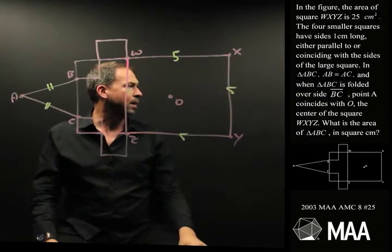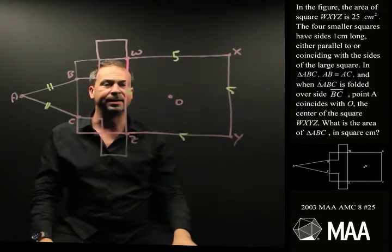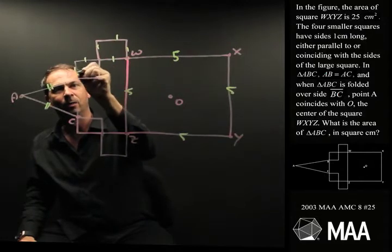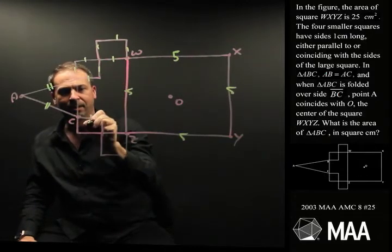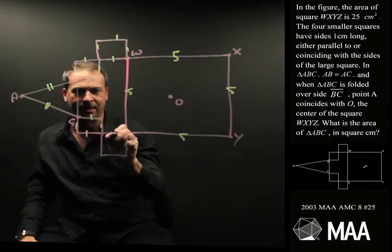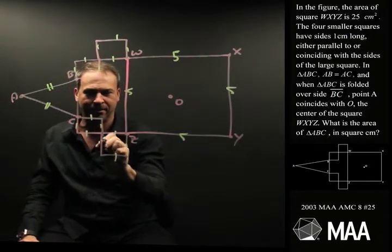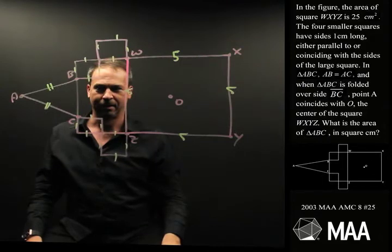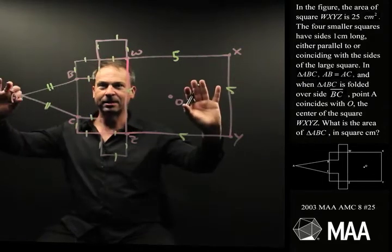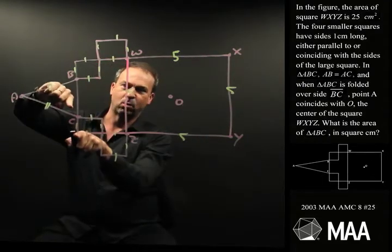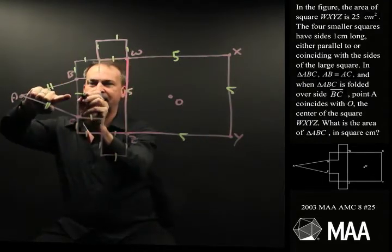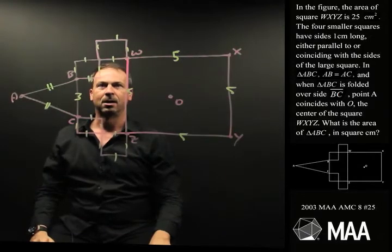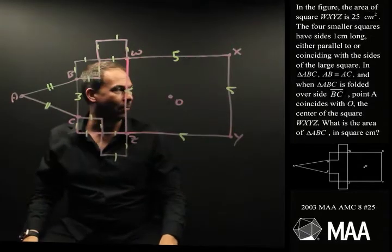The four small squares each have sides one centimetre long. So that's one and that's one. I can just see that's now three.